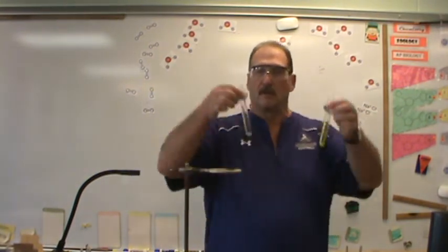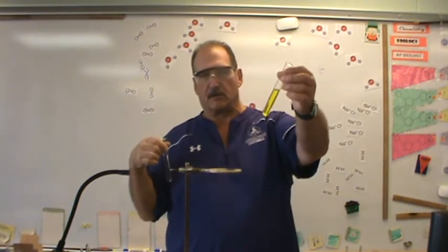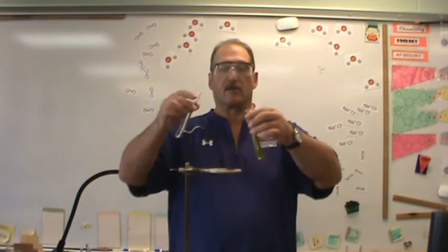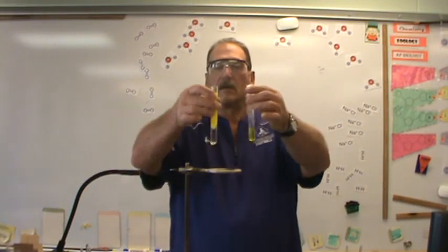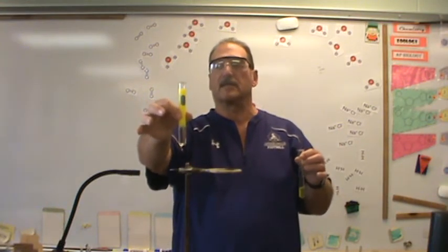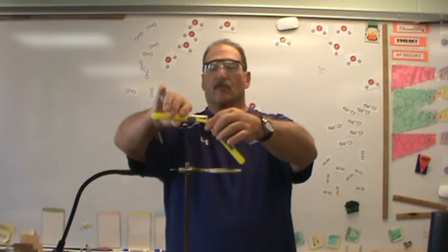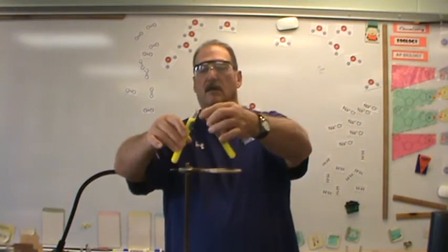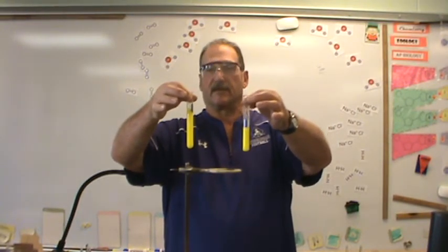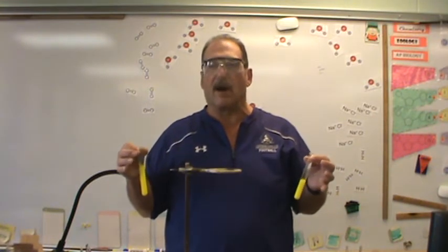Now I have two separate test tubes. This contains an aqueous solution of lead nitrate, and this contains an aqueous solution of potassium chromate. I'm going to mix them together to see if a change occurs. Immediately you can see that the test tube has started to become cloudy. It has a bright yellow color — what we call chromate yellow. When I mix them back and forth, that will complete the reaction. What you really have is a solid material, and that solid material turns out to be lead chromate. The lead from the lead nitrate has reacted with the chromate from the potassium chromate to form new molecules of lead chromate.